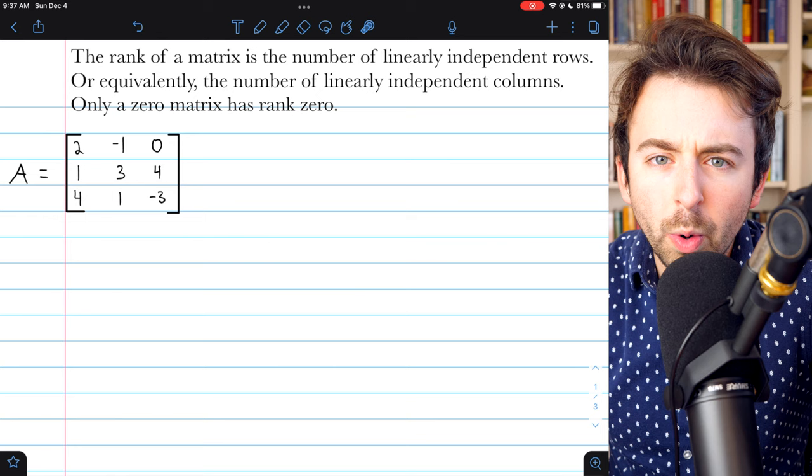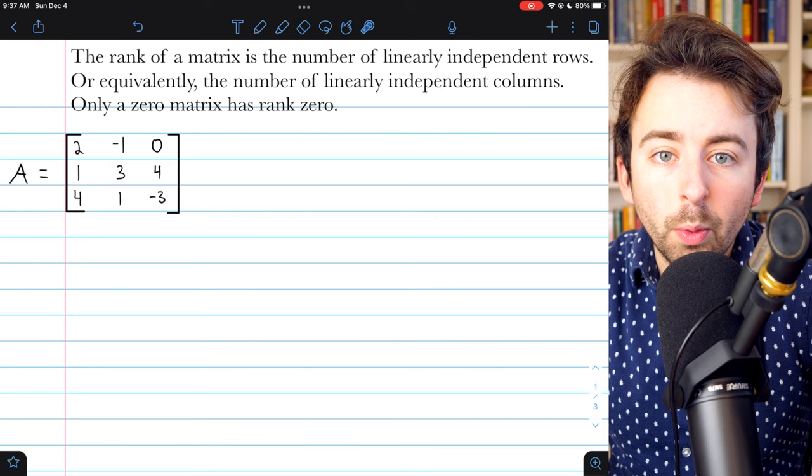Here's a matrix A. It's not the zero matrix, so its rank is positive. Generally, to find the rank of a matrix, we'll want to put it into row echelon form.